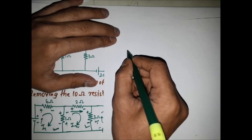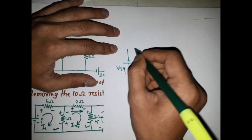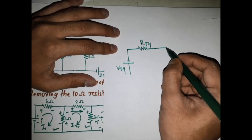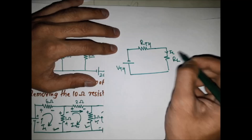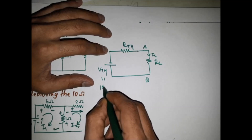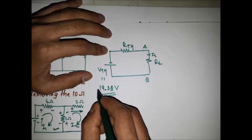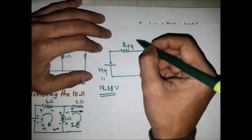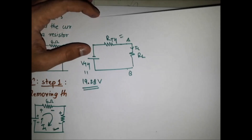The next step is replacing the network with the Thevenin equivalent circuit. In this circuit, VTH is in series with RTH, which is in series with the load resistance RL. We need to find the current through the load resistance. The terminals are A and B, and the value of VTH is 19.28 volts. Here, we do not use the negative sign because we have already accounted for the polarity.